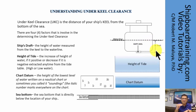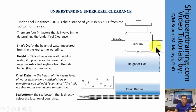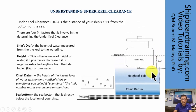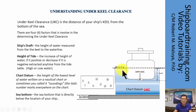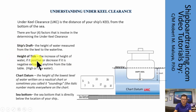Now we will combine the chart datum, the height of tide, and your ship's draft down to the waterline to find out what the underkeel clearance is. The ship's draft, chart datum, and height of tide together with the sea bottom are the four factors involved in determining underkeel clearance — also written in short as UKC. Remember: ship's draft, height of tide, chart datum, sea bottom — four factors that determine the underkeel clearance of your ship.